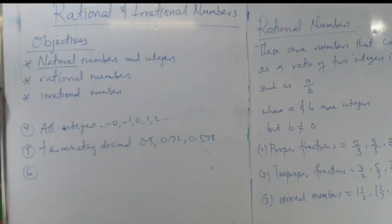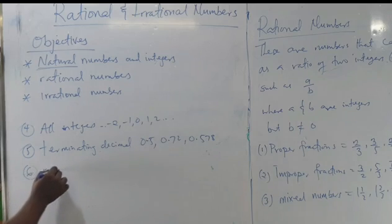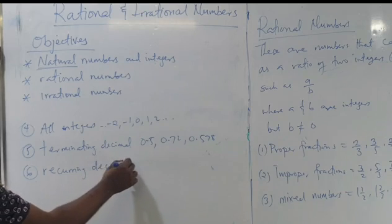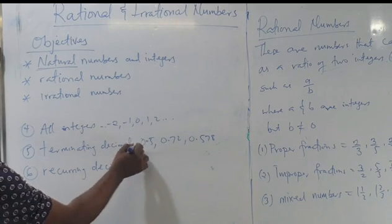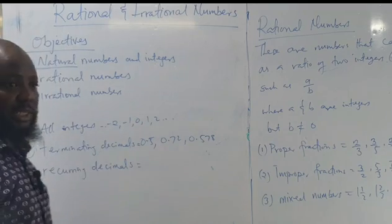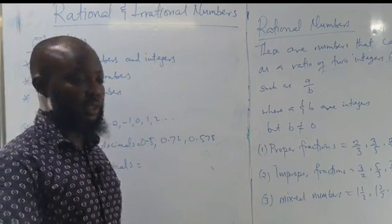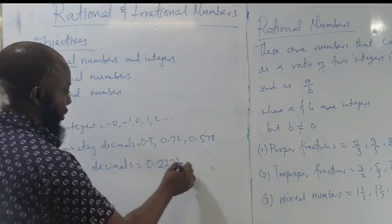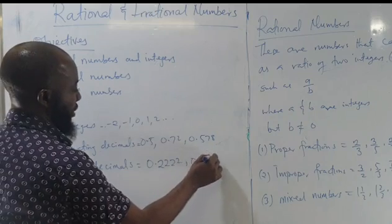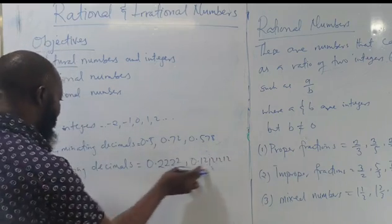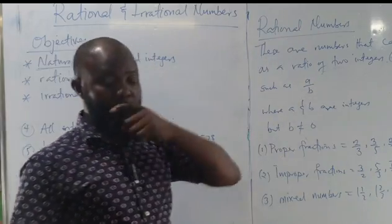Number six is recurring decimals. Recurring decimals are decimals that keep repeating themselves. So we can have 0.222... continuing like that, or 0.121212... — you must have come across these. All these are under rational numbers.